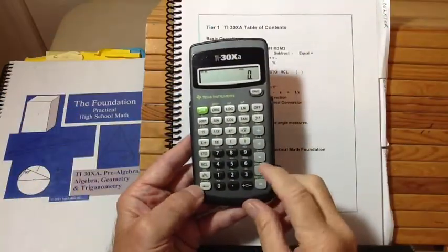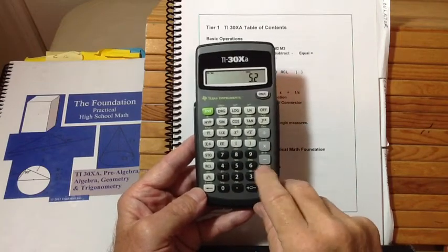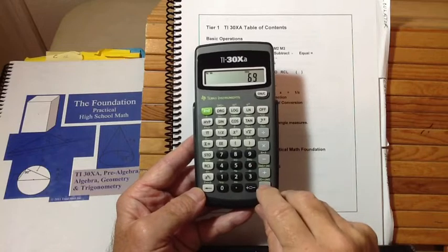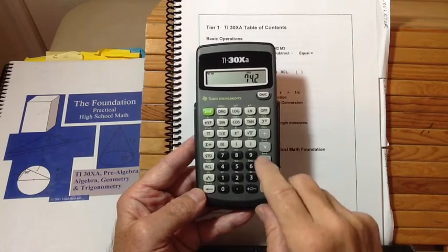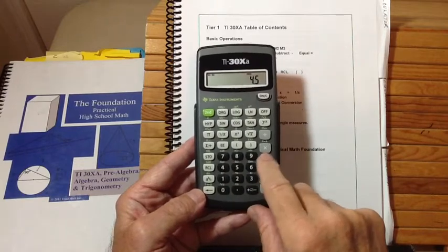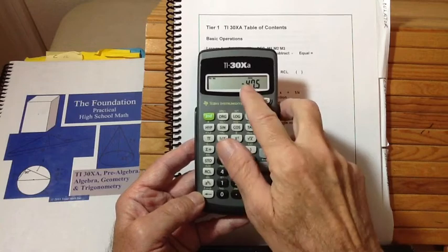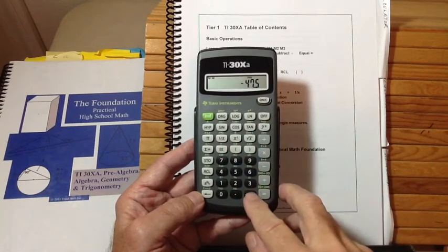Now, the next thing we do is we make sure they understand the addition and the subtraction key. So we have them put in numbers, and we have them add the numbers, and then we have them hit equal, and they see the sum of the numbers. And we do the same thing with subtraction, and we give them a lot of exercises with addition and subtraction. And, of course, that's very easy to do. And, of course, you can get a negative number if, in fact, you've subtracted something.